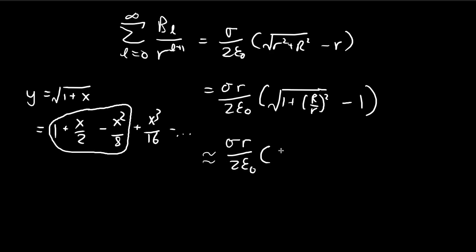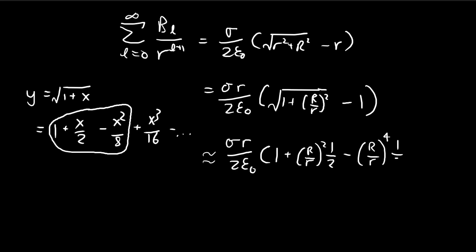Applying this formula, our (R/r)² will be our x. So we get approximately 1 plus (R/r)² times one-half, minus (R/r)² squared times one-eighth — that's (R/r)⁴ times one-eighth. We omit higher-order terms since the question doesn't require them. The ones cancel out nicely.